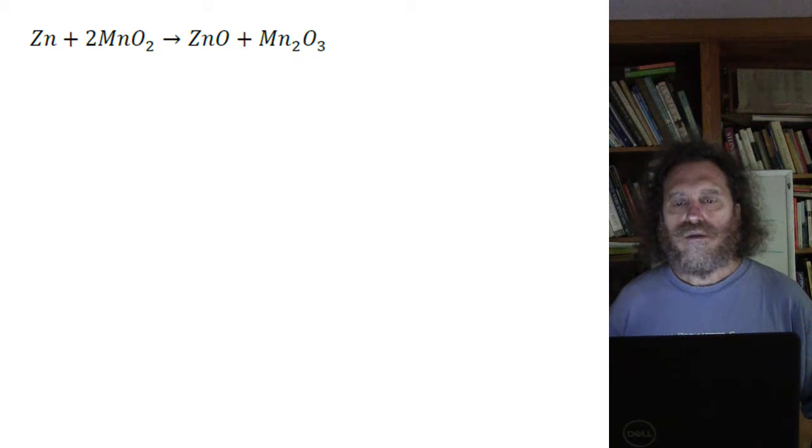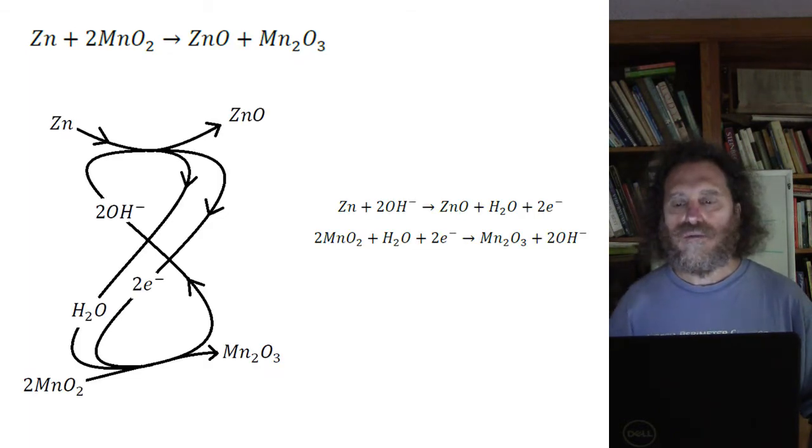When you see this chemical reaction, it's not at all obvious why you can get electricity out of this, but let me show you a little bit more detail to this reaction. What actually happens is there's two chemical reactions happening in different compartments of the battery. Those two half reactions, as they call them, can exchange particles in the total chemical reaction.